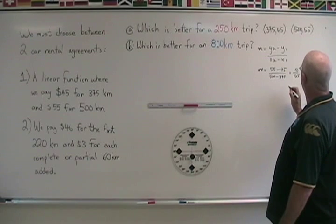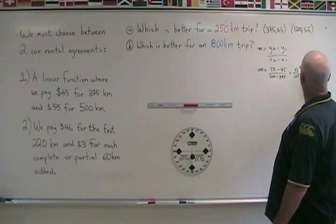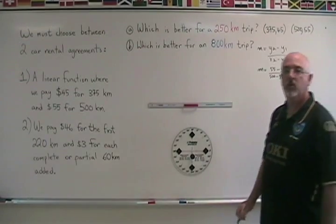Which reduces to 2 over 25. Our slope is 2 over 25.